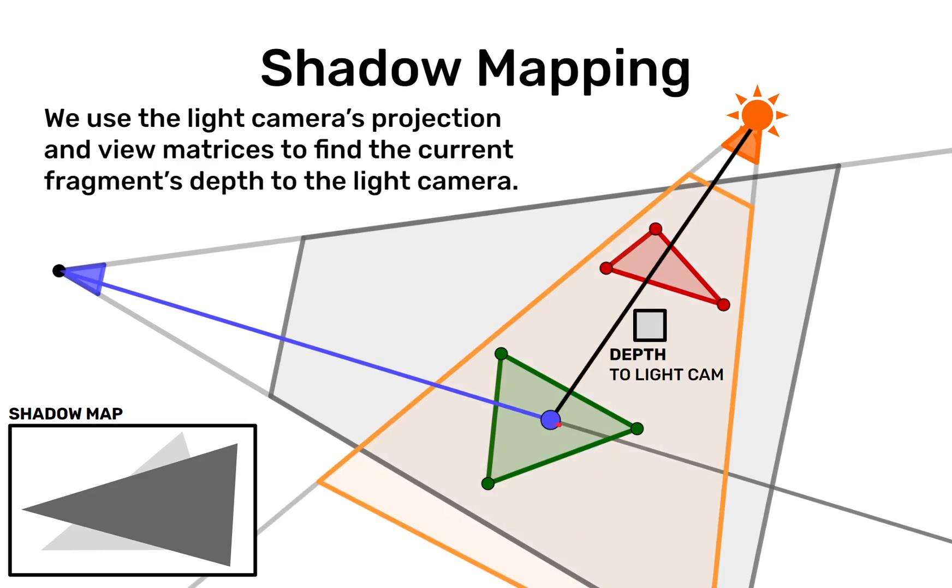While we're rendering it we want to calculate the depth of that fragment to the light camera. To do that we just take the light cameras projection and view matrices and use it on the world space coordinate of that fragment. This will give us the depth to the light camera for this fragment that we see from the main camera.